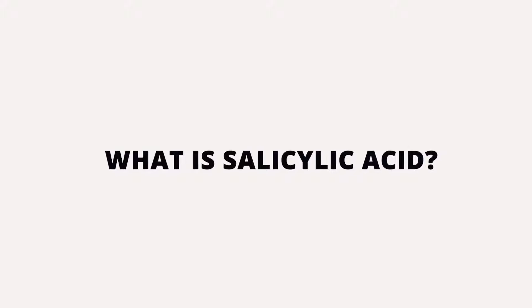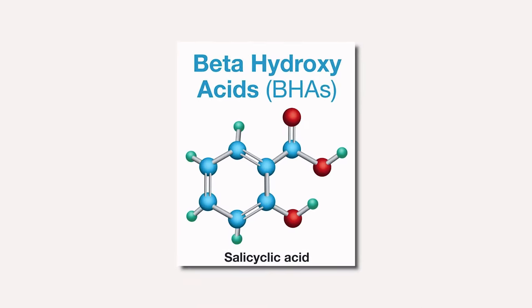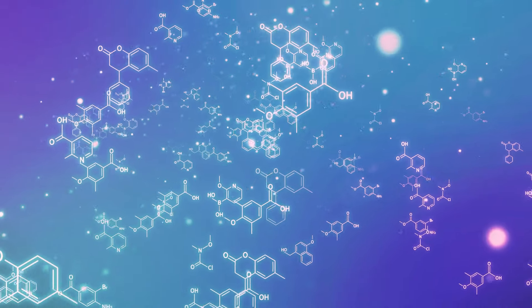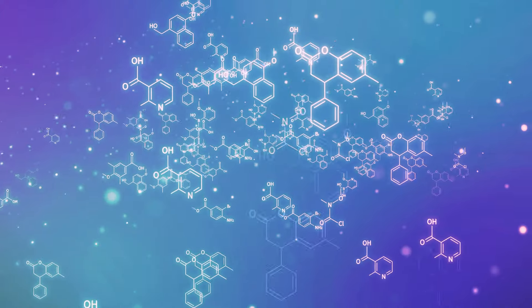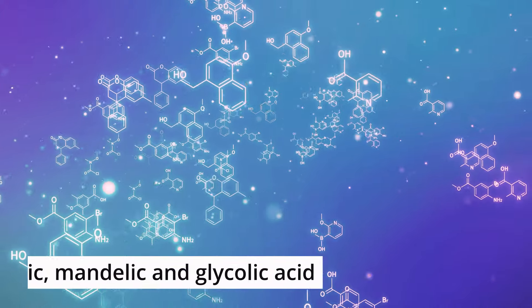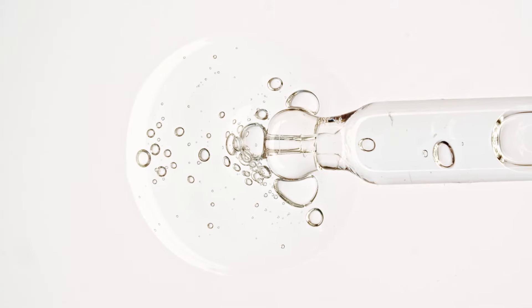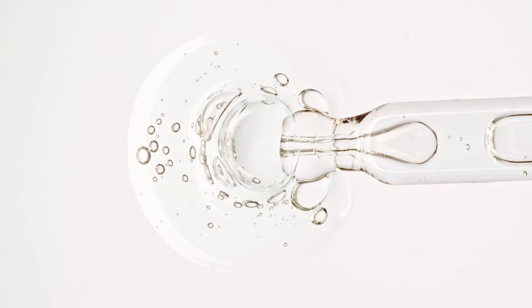So what is salicylic acid and how does it work within the skin? Salicylic acid is a beta-hydroxy acid, otherwise known as a BHA. BHAs differ from alpha-hydroxy acids — AHAs — like lactic, mandelic, and glycolic acid. AHAs are water-soluble and they work at exfoliating, hydrating, and revealing healthier skin.